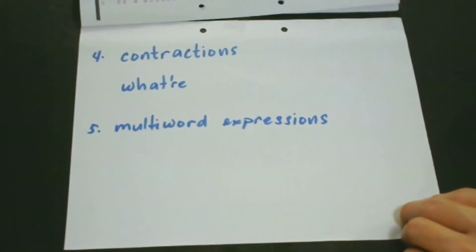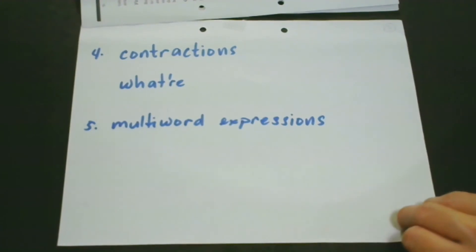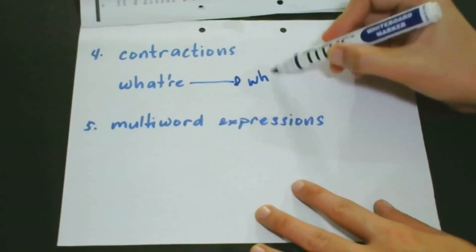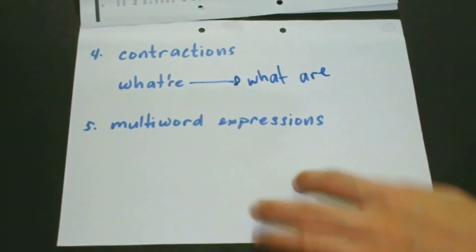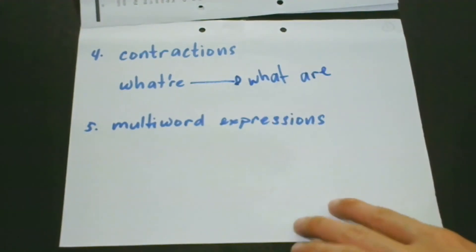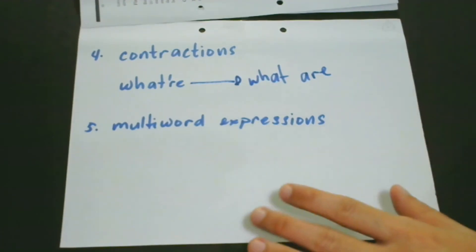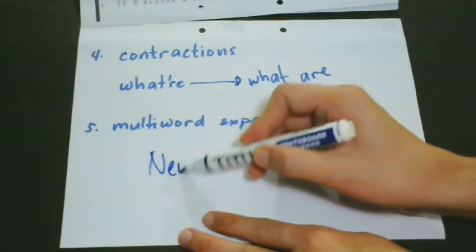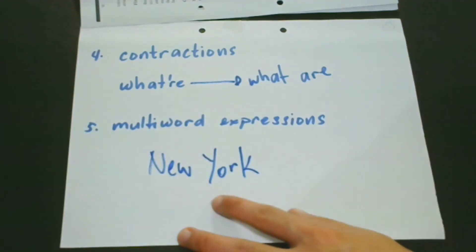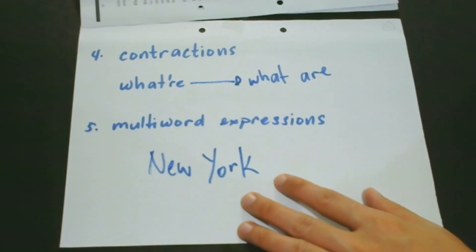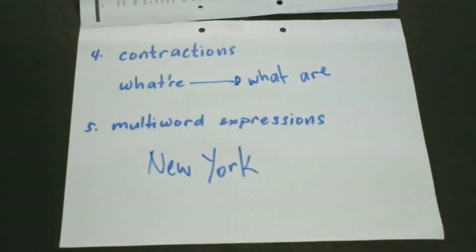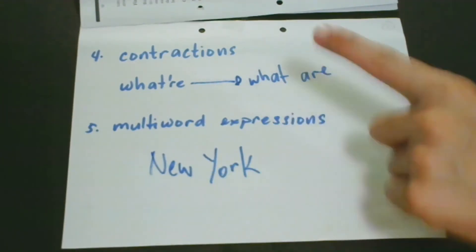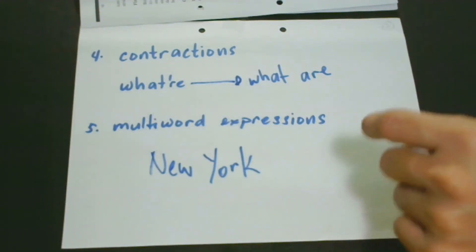Rule 4: in the case of contractions, for example 'what're,' when we tokenize this contraction it becomes two words: 'what' and 'are.' Also, depending on the application, multi-word expressions are tokenized as a single word. For example, 'New York' — even though 'New' and 'York' are two words, 'New York' is considered one unit and therefore treated as a single word.